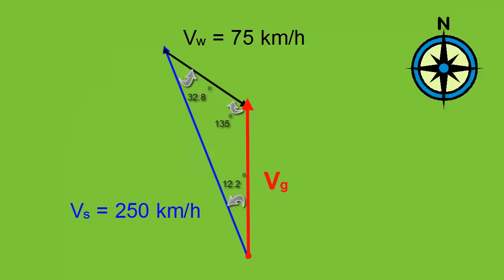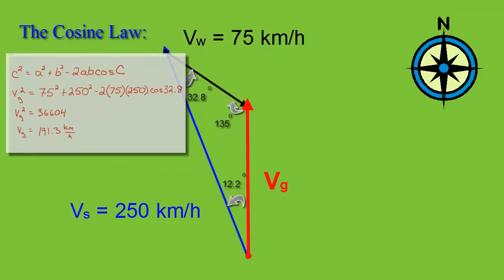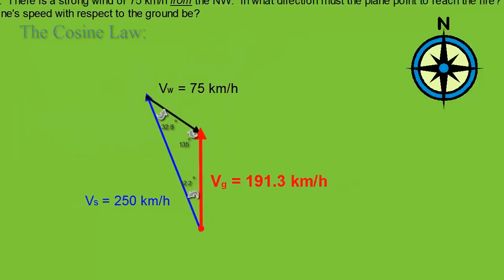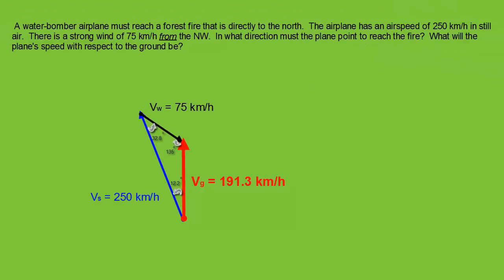Finally, we use the cosine law to determine the magnitude of the velocity with respect to the ground, since we know an angle between two sides. When we work it out, we get 191.3 kilometers an hour for our overall velocity with respect to the ground.